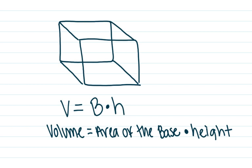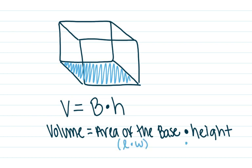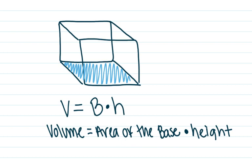The area of the base refers to this bottom part — this is the base of the shape. To find the area of the base, you multiply the base times the height of that face, or in simpler terms, the length times the width. So the area of the base is length times width, and then you multiply that result times the height.